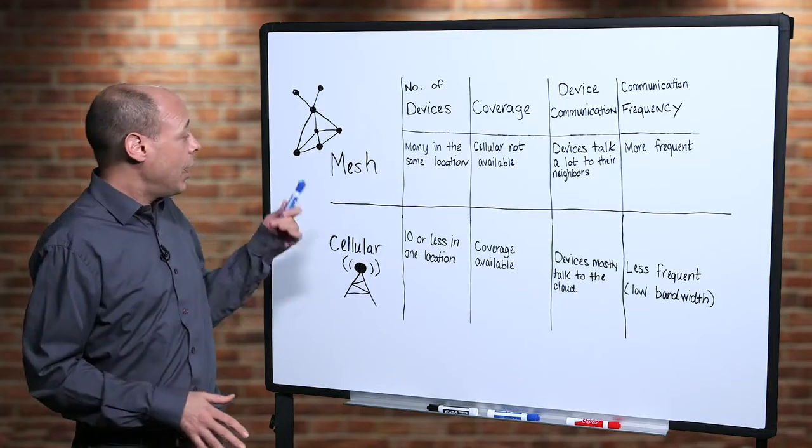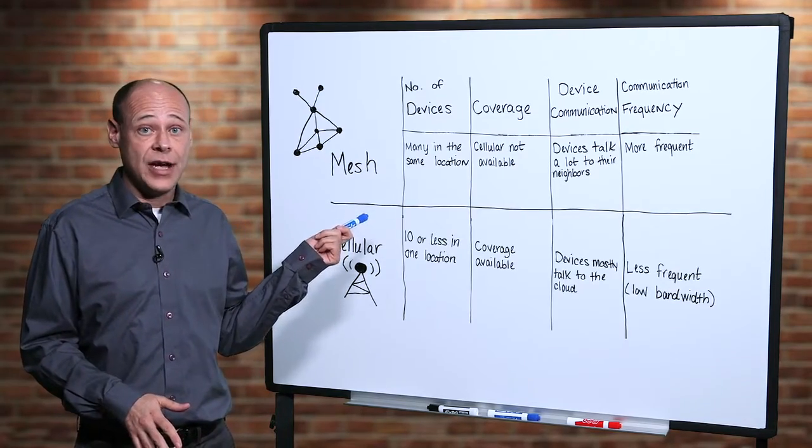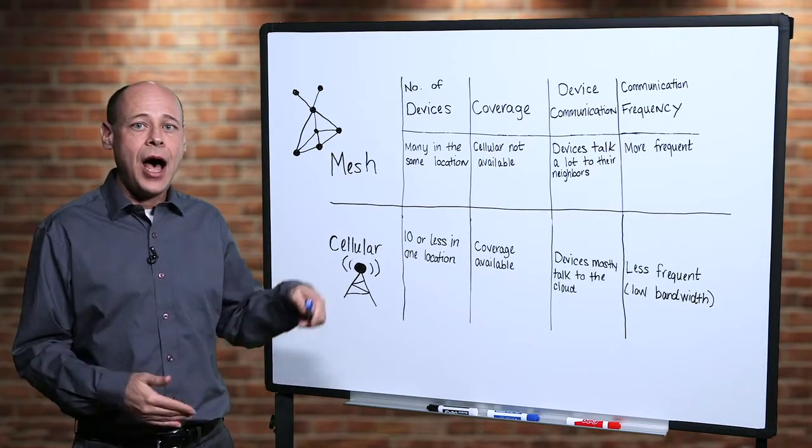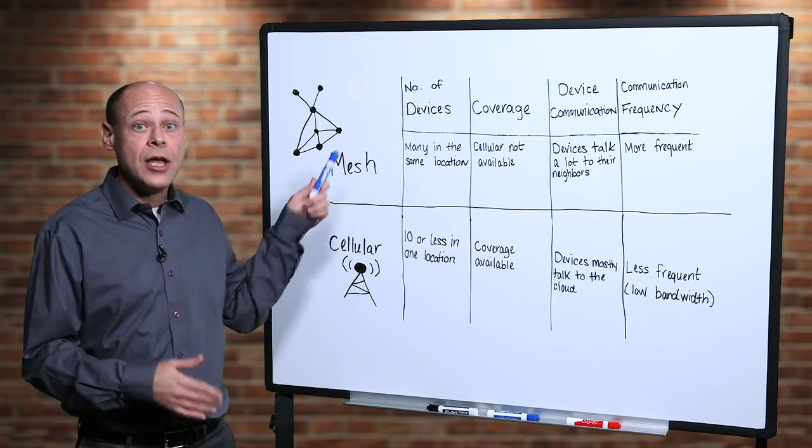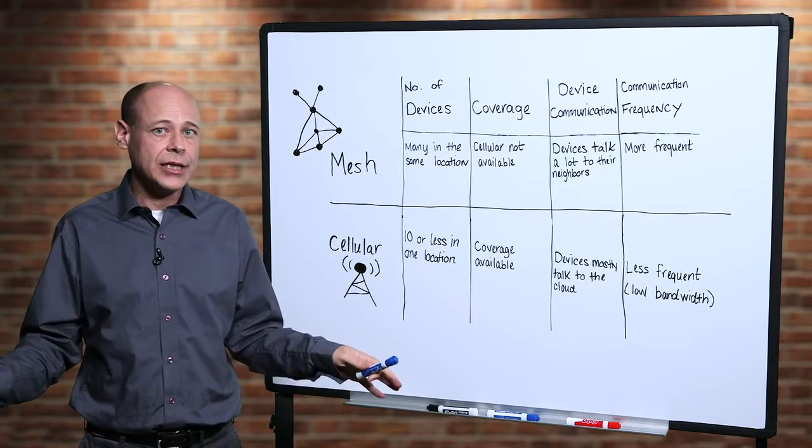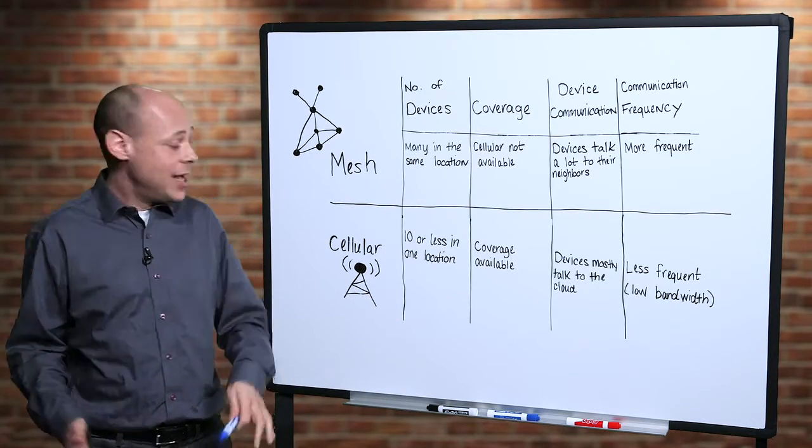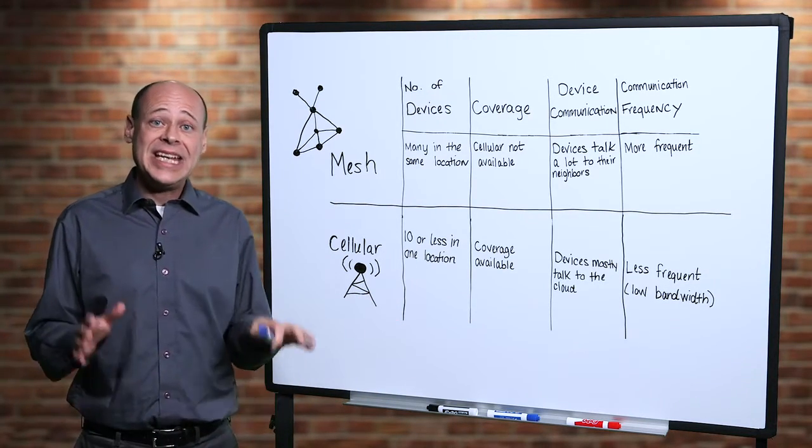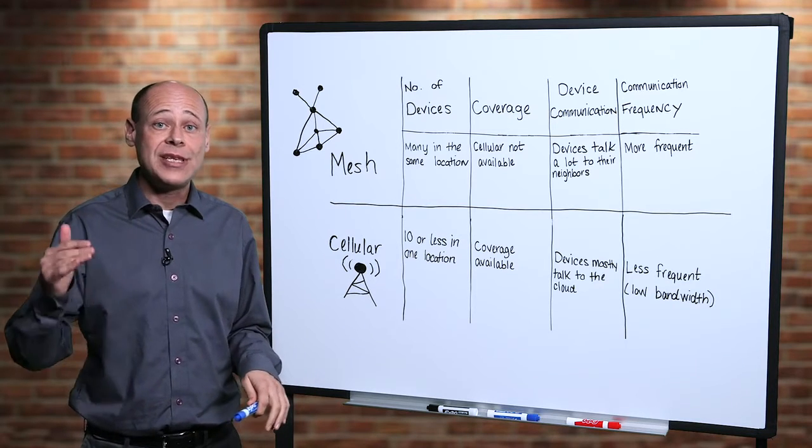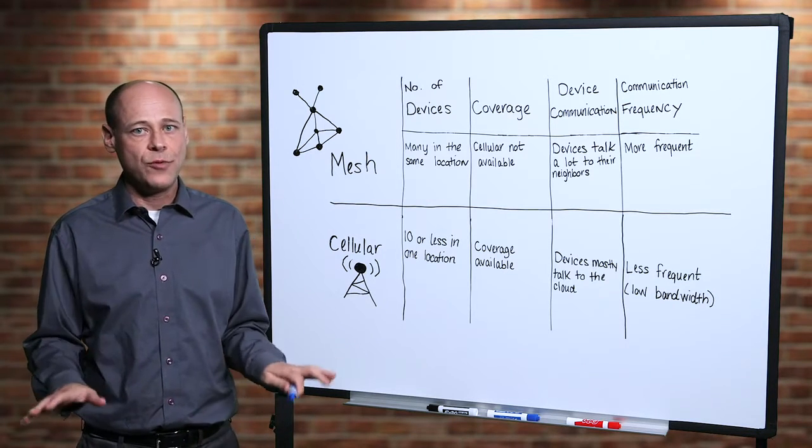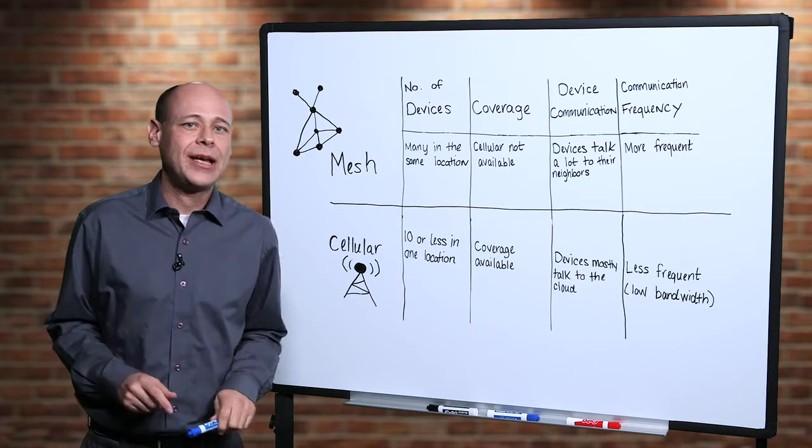Mesh networking allows you to extend the reach of your device network by allowing data to hop from device to device so that radios too far apart to hear each other directly can still communicate. In cellular technology, each device communicates through the cellular network but never directly with each other. Here's a quick comparison.